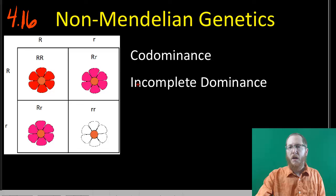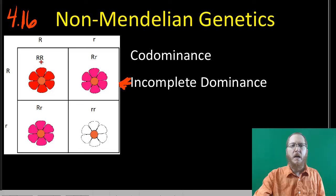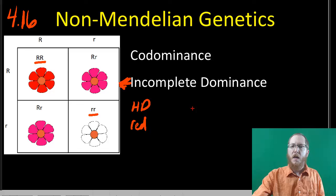Some of these specifics will be codominance and incomplete dominance. With incomplete dominance, we don't really have a true dominant and a true recessive. Instead, there are three possibilities. There's a red flower with two red alleles, and a white flower with two white alleles. So homozygous dominant will be red phenotypically, and homozygous recessive will be white phenotypically. Everything's kind of normal thus far.